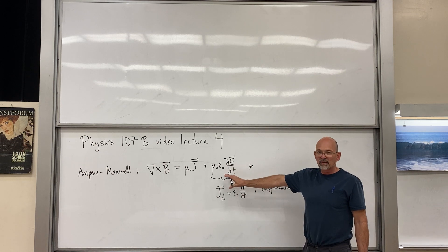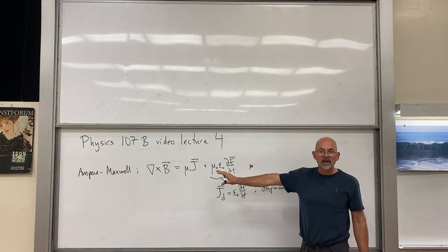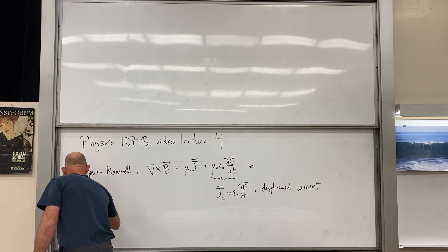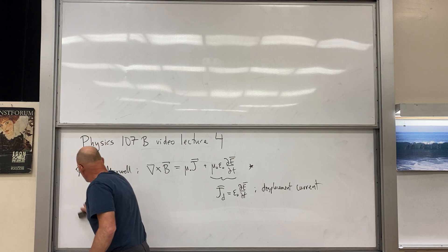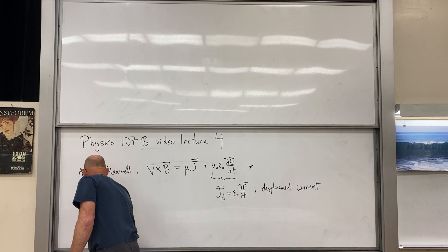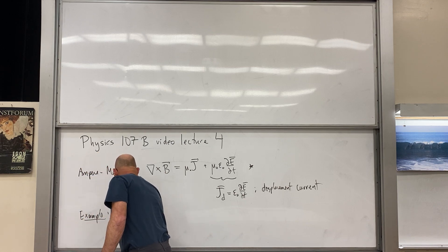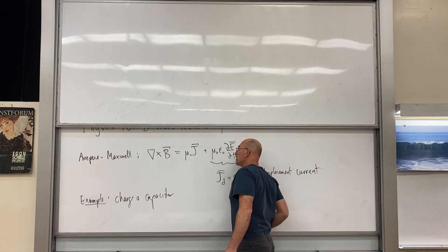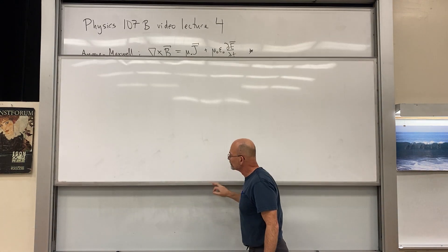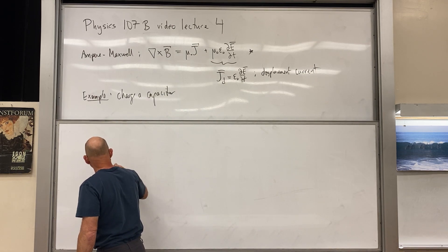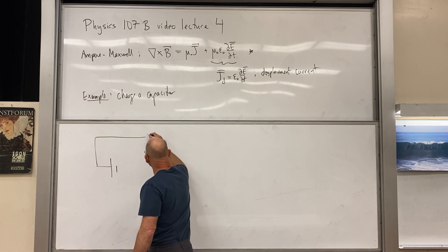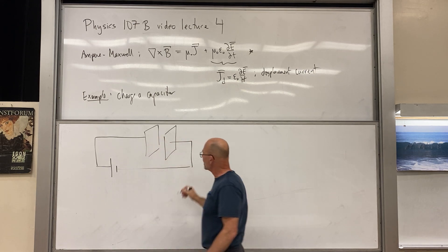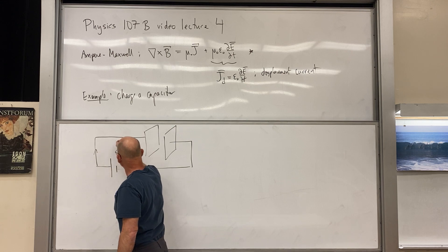There's an interesting model that allows us to visualize what's going on here, and that model is the charging of a capacitor. Suppose we have a battery connected to a capacitor — two parallel plates. We close the switch and current flows, so we end up with positive charge on one side and negative on the other.